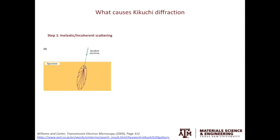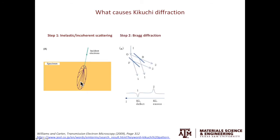The first question we try to address is: how does Kikuchi diffraction happen? To undergo Kikuchi diffraction, the electrons from the incident beam have to be scattered twice. These electrons first undergo inelastic or incoherent scattering. Starting from this point, these electrons will follow a random walk. After that, these electrons will subsequently undergo Bragg diffraction. For the same set of lattice planes for Bragg diffraction, the electrons can be scattered by the front face of the lattice planes as well as the back face of the lattice planes.